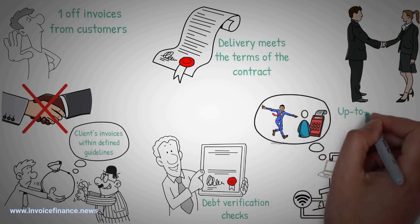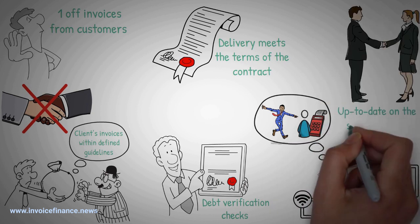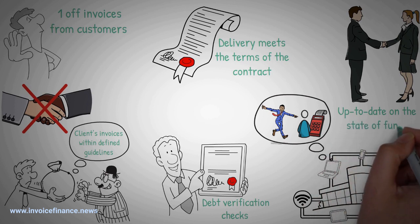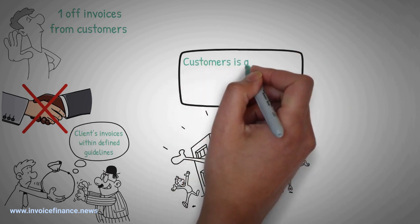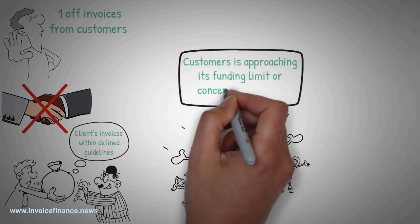Another aspect of the relationship between a company and its invoice financier is keeping each other up to date on the state of funds available. It is best if a company is notified if one of its customers is approaching its funding limit or concentration limit. Knowing the state of play allows a company to avoid issuing large invoices that are ineligible for factoring.